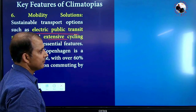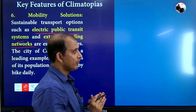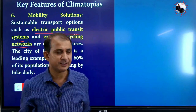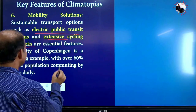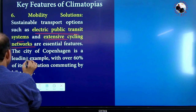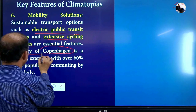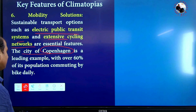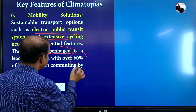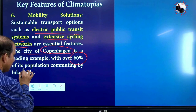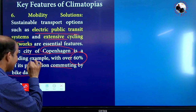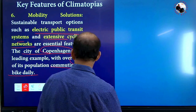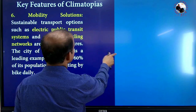Extensive cycling networks and walking in cities are essentially important features of climatopias. The city of Copenhagen is one example of this, where 60% of people use bikes daily — they use cycles daily. This is a mobility solution that demonstrates green mobility in action.